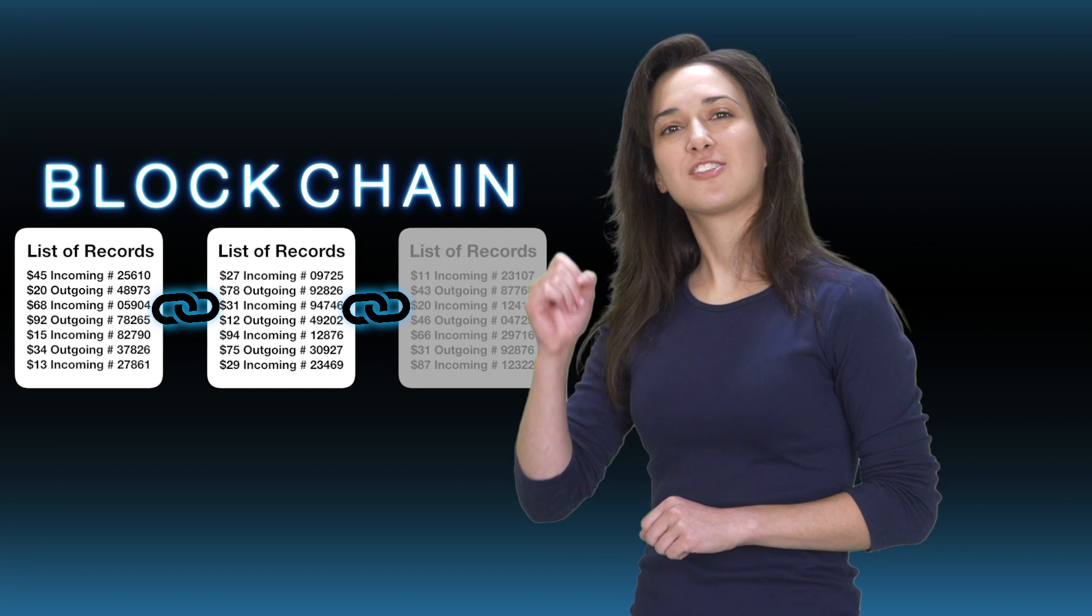This allows a direct connection between Bitcoin users by removing the need for a third party. So, again, imagine a list of transactions as a block. And each block is being recorded on a public ledger. So, as blocks of transactions are recorded on a running ledger, it creates a chain of blocks, hence the term blockchain.